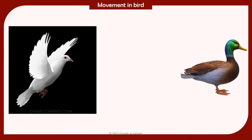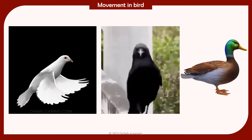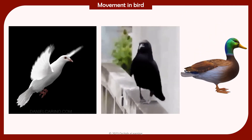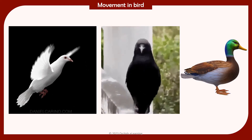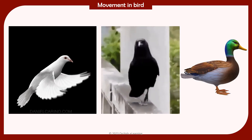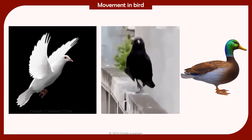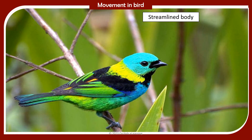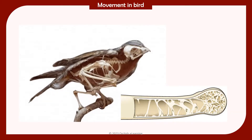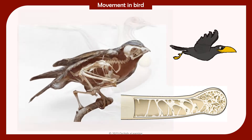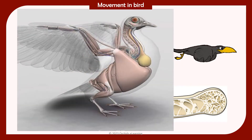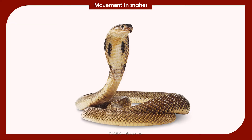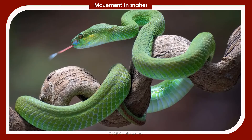Movement in birds: Most birds are capable of flying. Birds can also walk, run, or hop on the ground. Birds such as swans and ducks can even swim in water. The features that help birds to fly include: streamlined bodies that make it easier to move through air, hollow bones that make them lightweight, wings that help them to fly, and powerful chest muscles that help them flap their wings during flight.